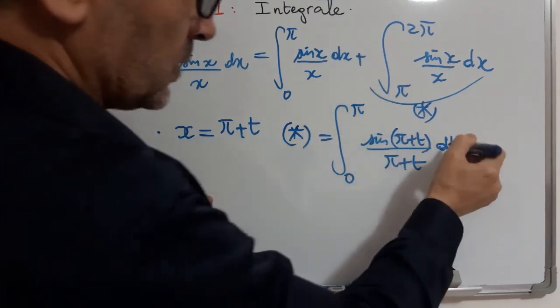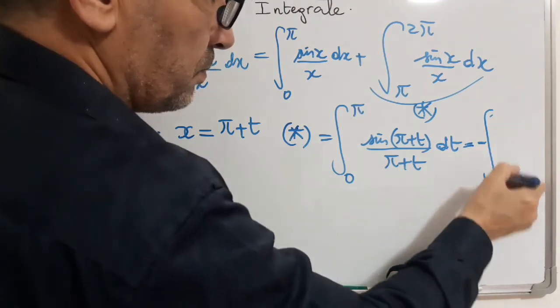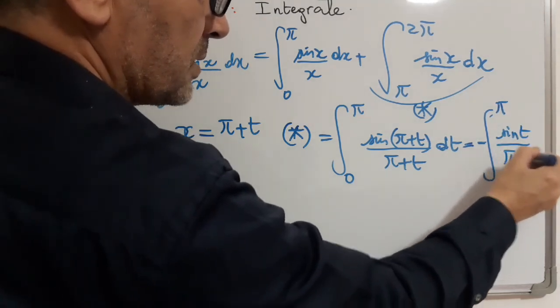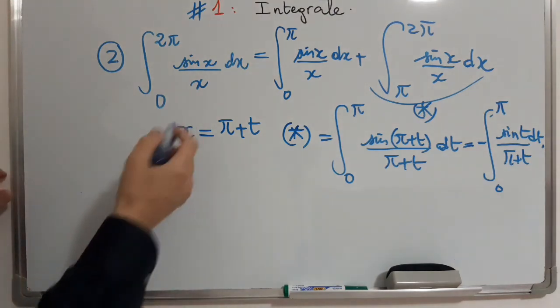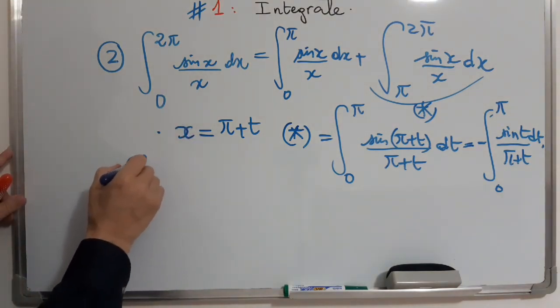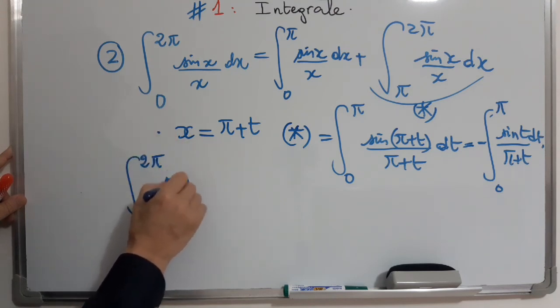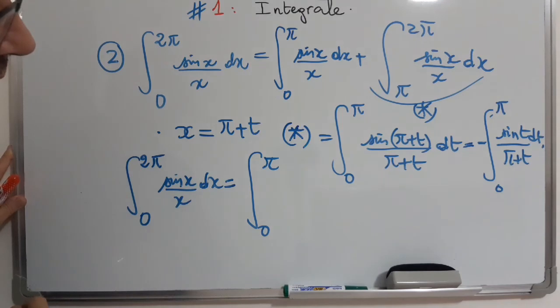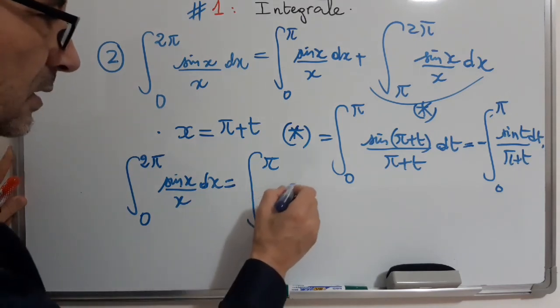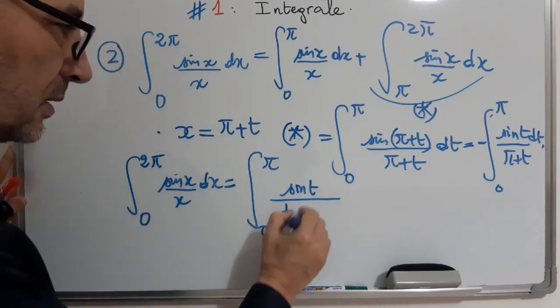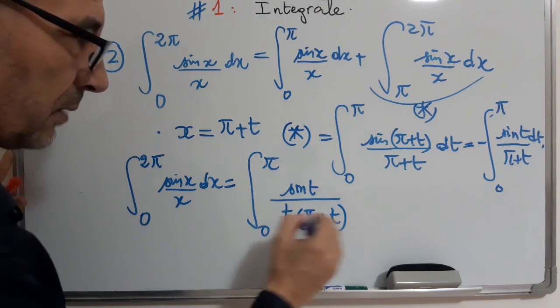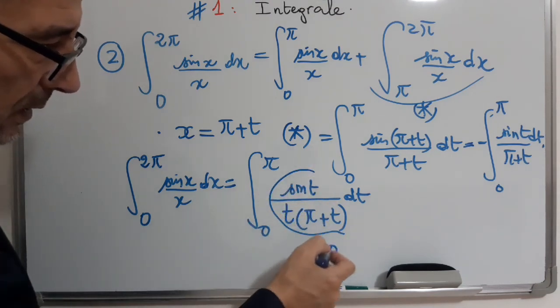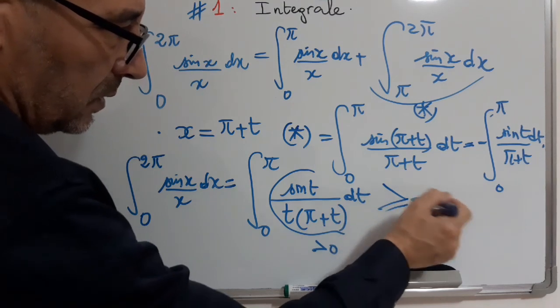Now, this is simply minus 0 to π sin t over π plus t dt. And finally, the whole integral 0 to 2π sin x over x dx will be equal to 0 to π after finishing the computation sin t over t times π plus t dt. And now, all this expression is positive in the interval 0 to π, so the integral will be positive.